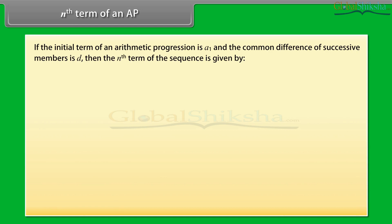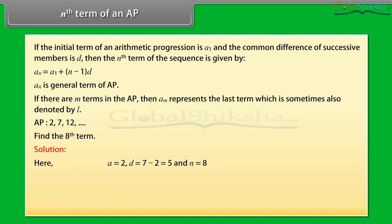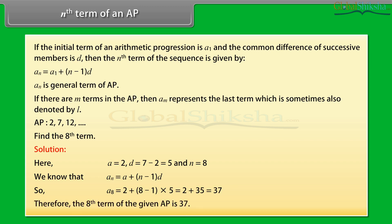If the initial term of an arithmetic progression is A1 and the common difference of successive numbers is d, then the Nth term of the sequence is given by: AN = A1 + (N−1)·d. AN is also called the general term of the AP. Using this formula, let's find the 8th term of the given AP where a = 2, d = 7 − 2 = 5, and N = 8. So A8 = 2 + (8−1)×5 = 2 + 35 = 37. Therefore the 8th term is 37.